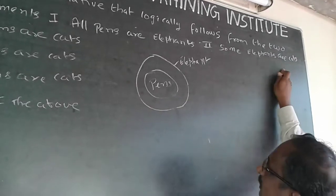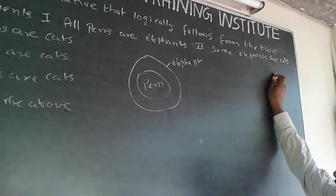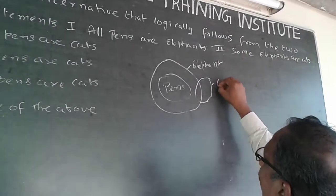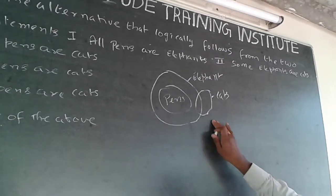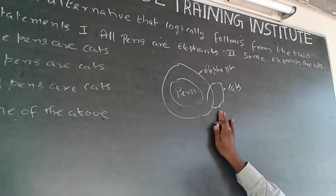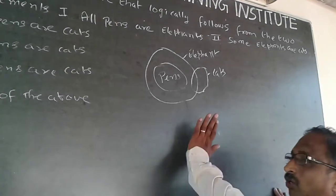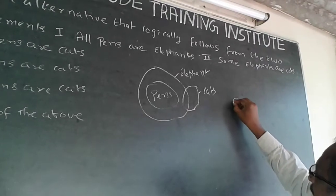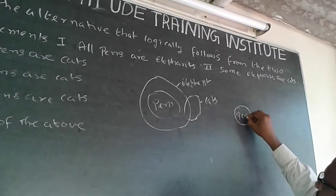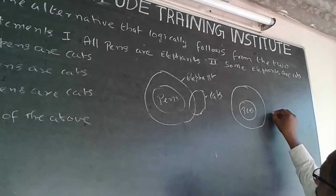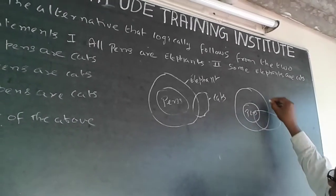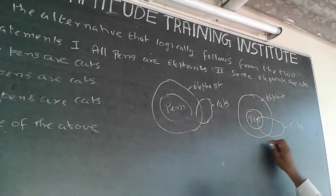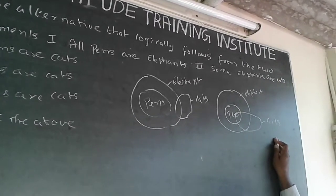The next step is some elephants are cats. I can draw a diagram where some elephants are cats — these are all cats — and in this diagram it indicates no pens are cats. But I should not restrict myself to this diagram alone, because I can also draw a diagram where all pens are elephants and some elephants are cats overlap such that some pens are becoming cats. This is also possible.